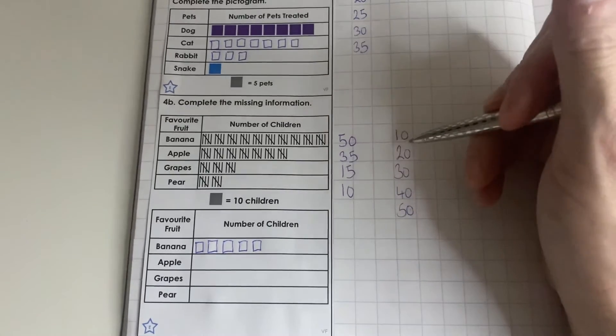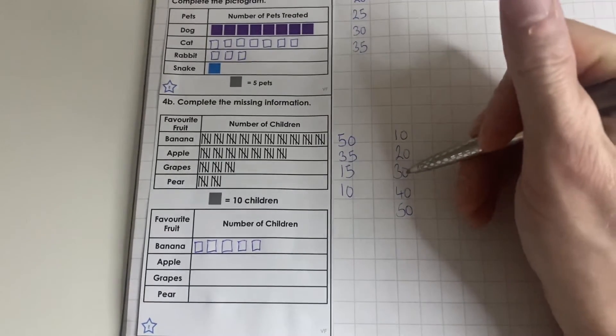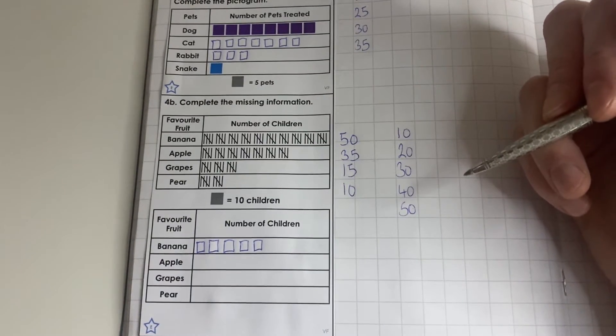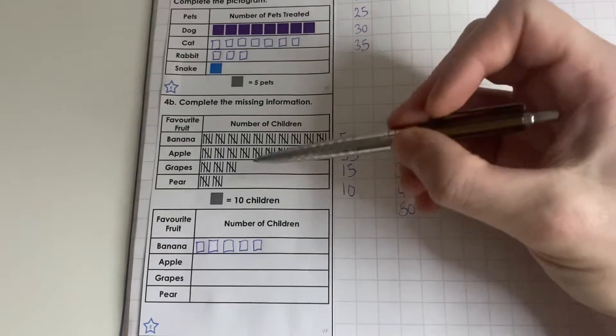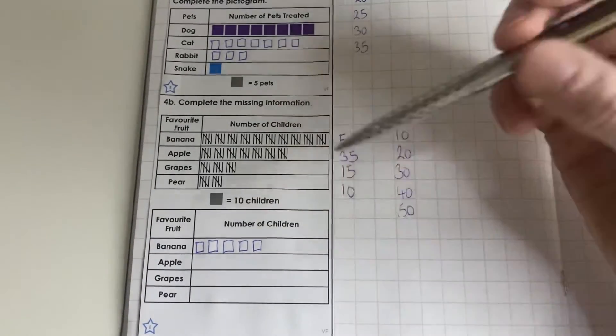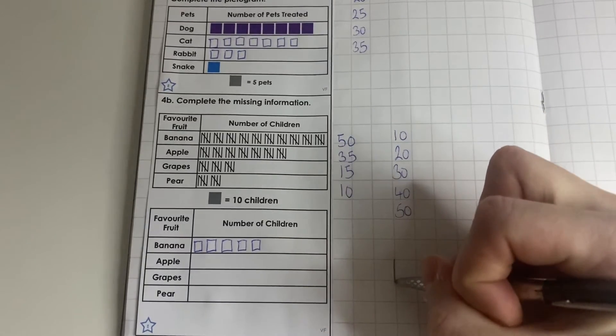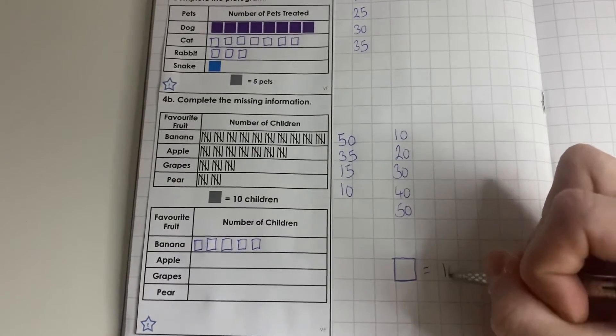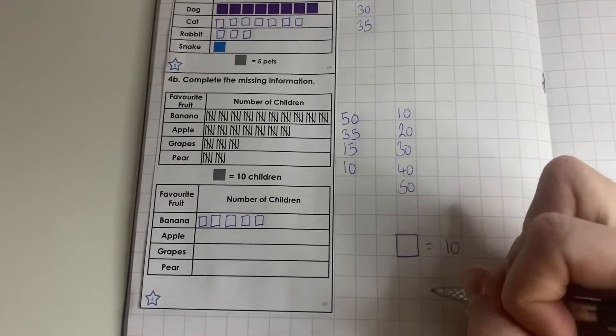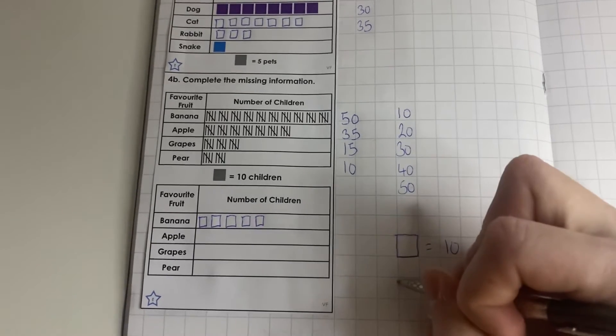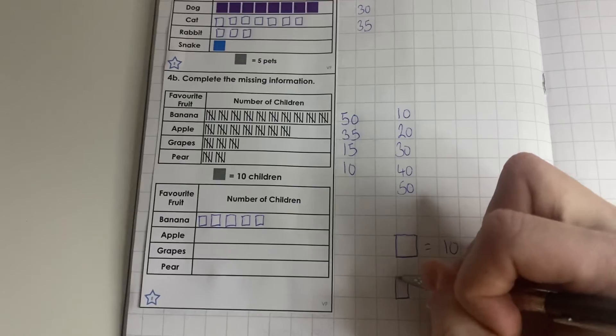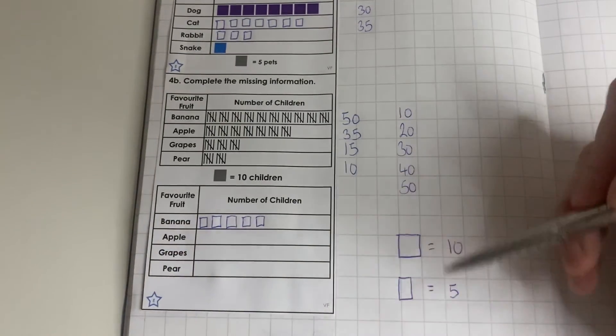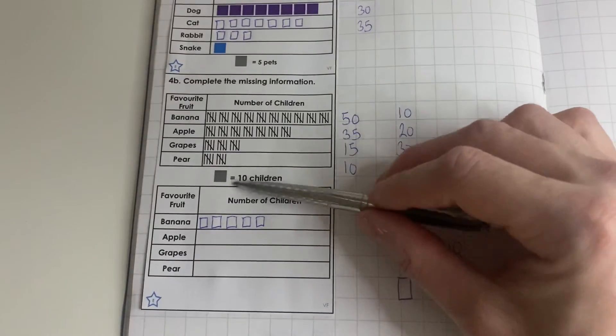Our next number for apple is 35. We've got 10, 20, 30, 40. As you can see, we've got a problem here that 35 isn't there. As pointed out earlier, a whole square is equal to 10 children. But to represent 5, what we will do is draw half of a square. This will represent that on our pictogram. We can do this because you can represent half the number by drawing half the picture.